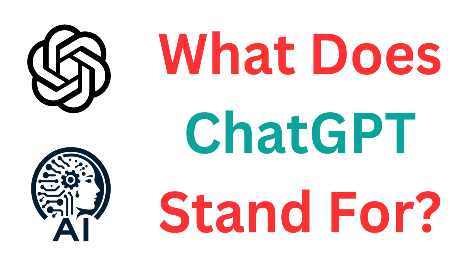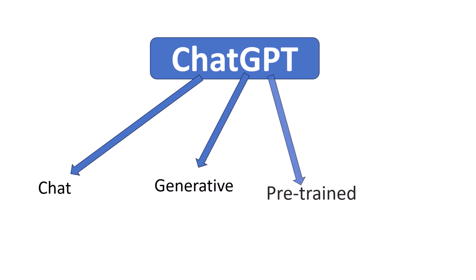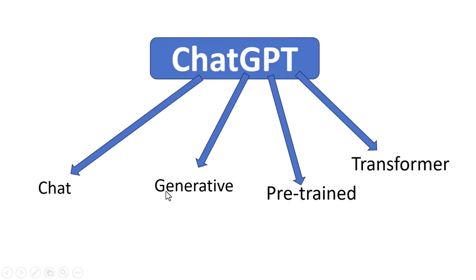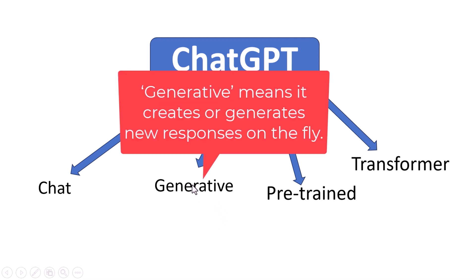Let us understand what exactly is ChatGPT. ChatGPT stands for Chat Generative Pre-trained Transformer. Let us understand these terms one by one. The 'Chat' part means it's built to interact with users in a conversational way — you ask something and it responds just like a human would.